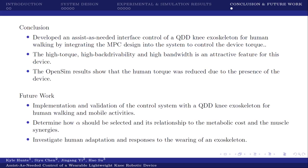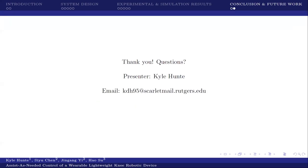For our future work, we plan to implement and validate this system. We also plan to look at how the value of alpha can be selected and how it relates to the metabolic cost and muscle synergies. Finally, we look to investigate how the human adaptation responses to wearing this device affects the individual and how can we lessen the adaptation. Thank you, everyone, for your time. If you have any questions or comments, you may contact me through the contact information given here on this slide. Thank you very much.